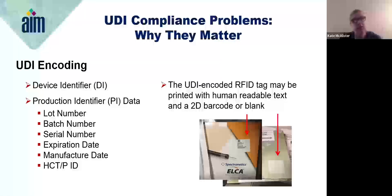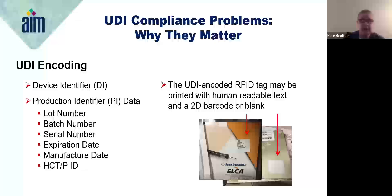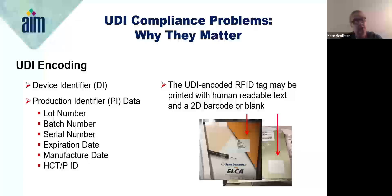UDI has two main parts. The first is the Device Identifier, which is specific to the device model and consistent across all units. The second is the Production Identifier, or PI, which varies by lot, serial number, or expiration date for precise tracking. Together, the Device Identifier and Production Identifier provide detailed tracking for each device and help ensure accurate identification and safety throughout its life cycle. The UDI is also encoded in an RFID tag — similar to a QR code or 2D barcode — which houses all of the DI and PI information.